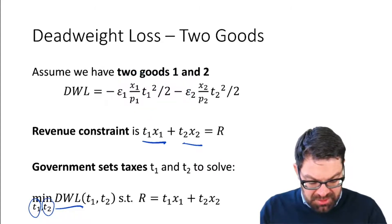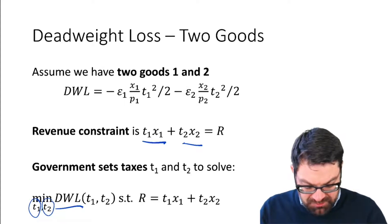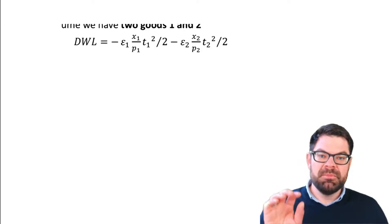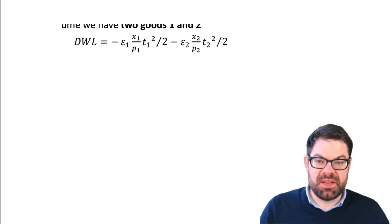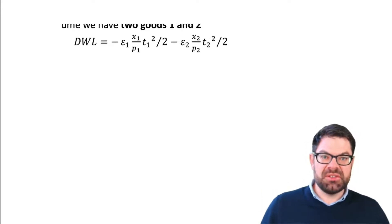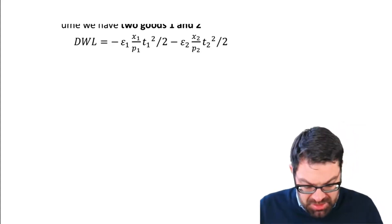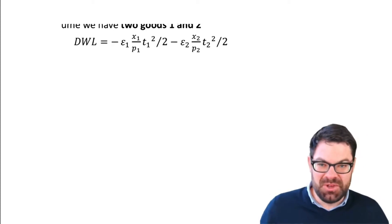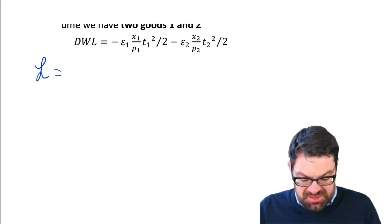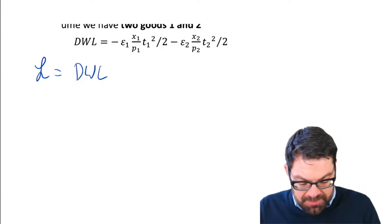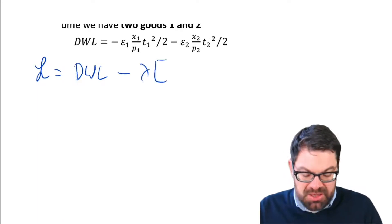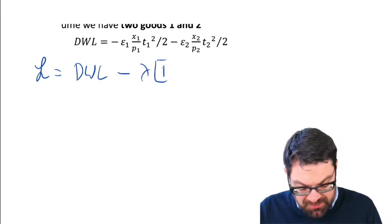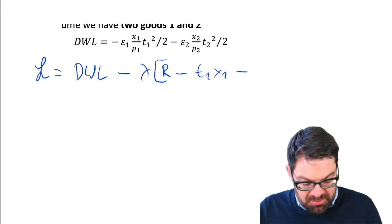We start with the formula for the deadweight loss, which we want to minimize subject to a revenue constraint. We use a Lagrangian to do that. The Lagrangian is the deadweight loss minus lambda — the Lagrange multiplier — times the revenue constraint set to zero: R minus t₁x₁ minus t₂x₂.